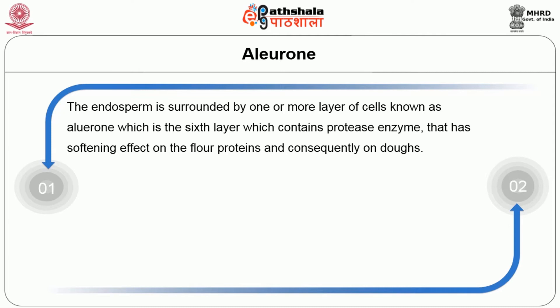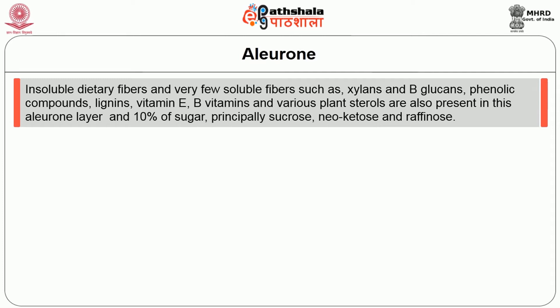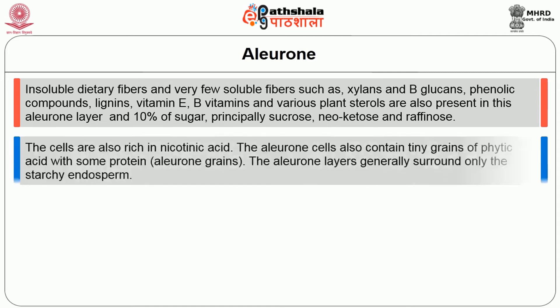Next we will move on to the aleurone layer. The endosperm is surrounded by one or more layers of cells known as aleurone, which is the sixth layer and contains protease enzyme that has a softening effect on the flour proteins and consequently on dough. In wheat, the aleurone is a single layer of thick-coated cubical cells and constitutes 7% of grain weight. The cells contain about 20% each of protein, oil and mineral. Insoluble dietary fibres and very few soluble fibres such as xylans and beta-glucans, phenolic compounds, lignins, vitamin E, B vitamins and various plant sterols are also present in the aleurone layer, and 10% of sugars particularly sucrose, neokestose and raffinose are also present. The cells are also rich in nicotinic acid.